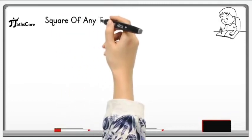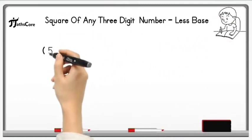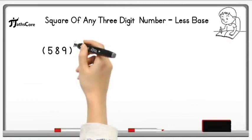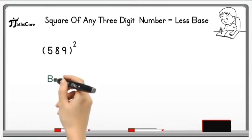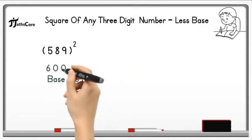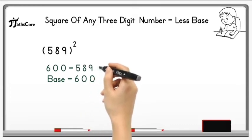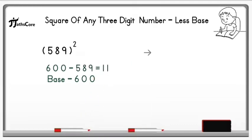Let's solve another example on it. Example is 589 square. For 589 base is 600. So first of all subtract 589 from 600. So 600 minus 589 is equal to 11.